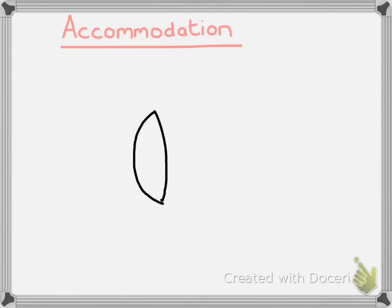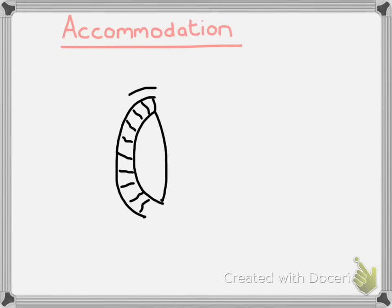The lens is elastic, which means that it can change its shape. It is convex, which means it bulges out slightly. Then attached to that are what we call suspensory ligaments, and they are attached all around the edge of the lens. Then attached to these suspensory ligaments is what we call a ciliary muscle, which is in a circular shape and sits around the edge of the lens.